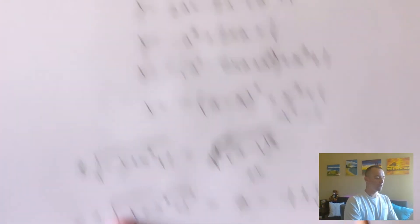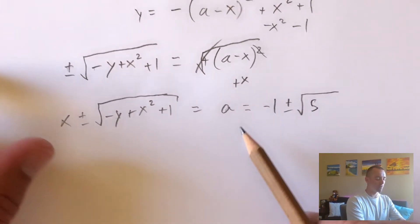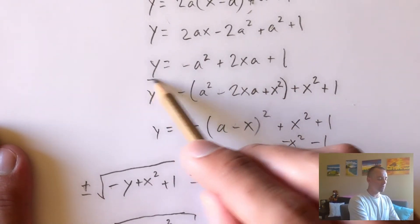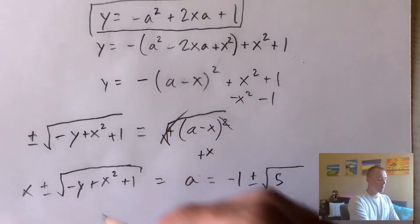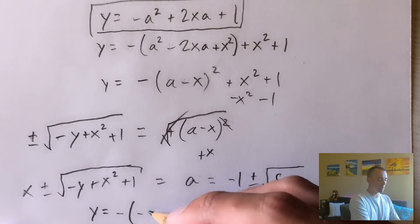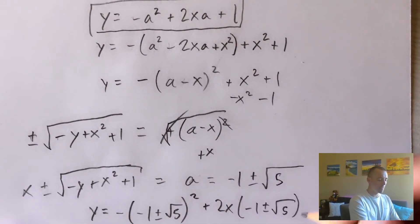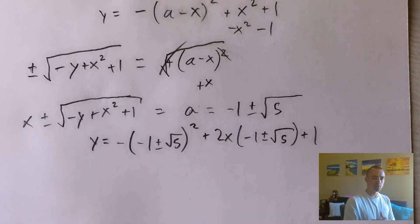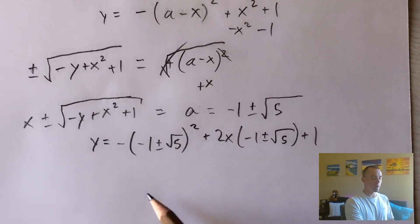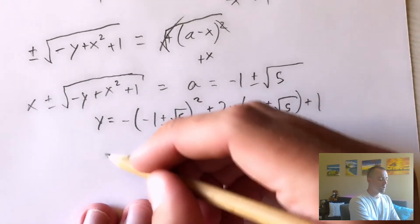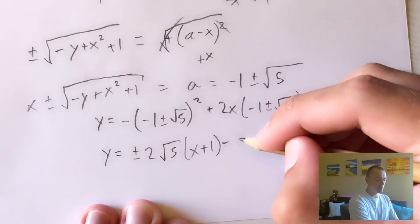If A is negative one plus root five, it gives us one of the two lines; if it's negative one minus root five, we get the other. We take these two A values and plug them back into our tangent line equation. Plugging our A into the simplified equation, we get y equals negative (negative one plus or minus root five) squared plus two x (negative one plus or minus root five) plus one. Treating these as two separate cases with positive and negative signs, expanding and simplifying gives us y equals plus or minus two root five times x, plus one, minus two x, minus five.